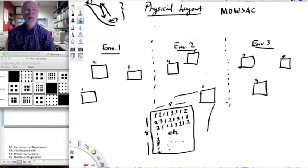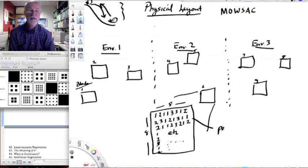In fact, we'll get some practice with that in class. So it's clear from this design that I have block as a factor, environment as a factor, and population as a factor. And in fact, I need this physical layout and a really clear depiction of it in order to produce the next step, which is the statistical layout.